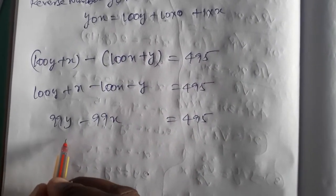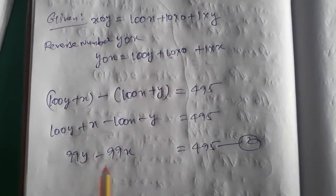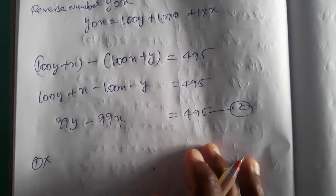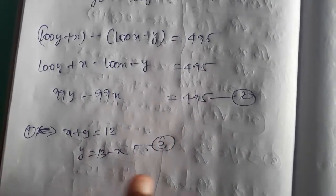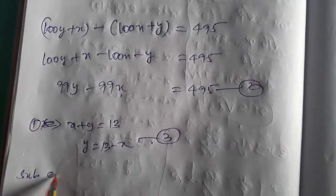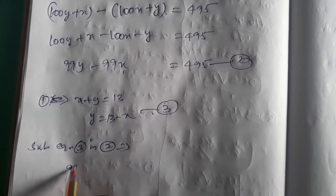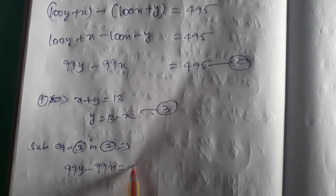Equation 1 is x plus y equals 13. Multiply equation 1 by 99. So 99 into 13 minus 99x minus 99x equals 495. That gives us 99y equals 99 into 13 minus 99x.